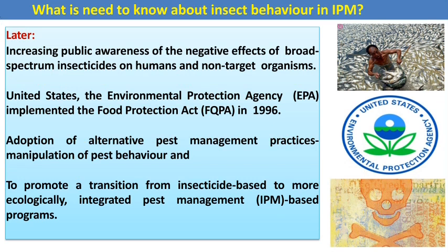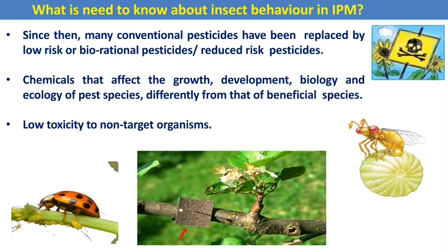Since then, many conventional insecticides have been replaced by low-risk or biorational pesticides. Chemicals that affect the growth, development, biology, and ecology of pest species differently from beneficial species — with low toxicity to non-target organisms — represent the importance of these biorational pesticides.